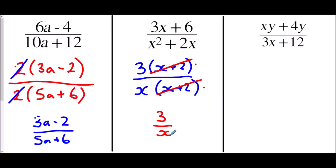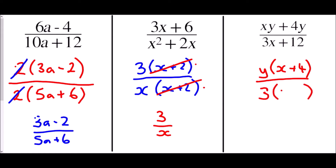In our last example of this set we have (xy + 4y) over (3x + 12). Factorising the top: the common factor of xy and 4y is y, giving y(x + 4). Factorising the bottom: the common factor of 3x and 12 is 3, giving 3(x + 4). We have the same bracket top and bottom, so they cancel out, and this simplifies to y over 3.